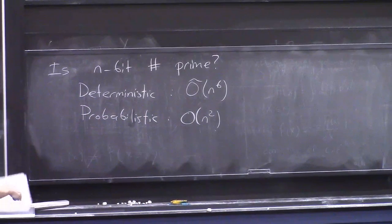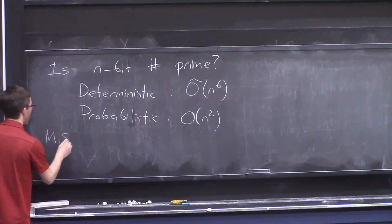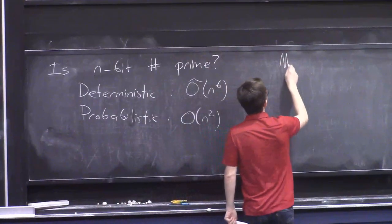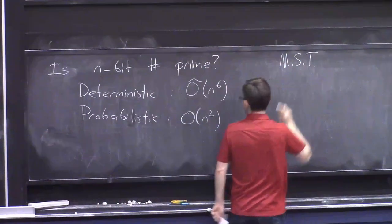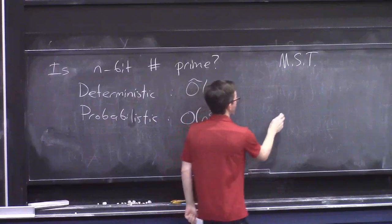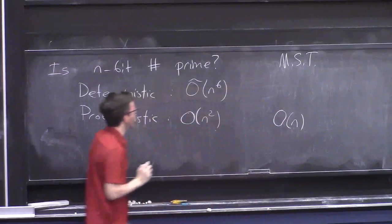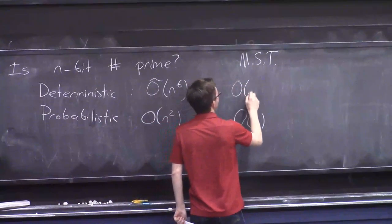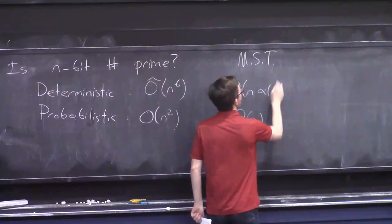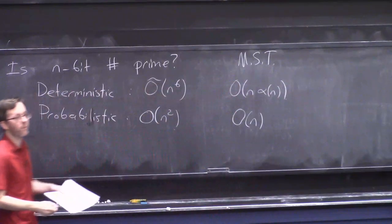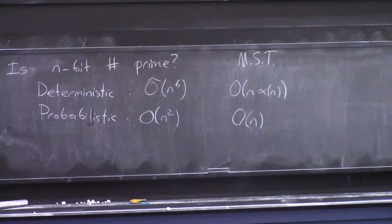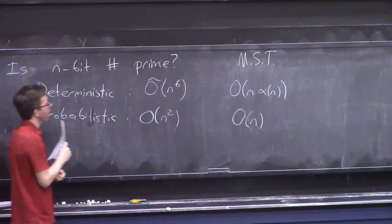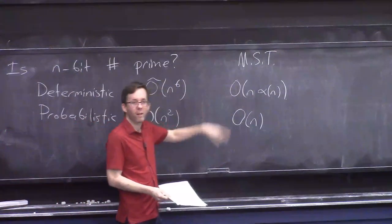So, that's pretty great, and in practice, people only use the probabilistic algorithm. Just one more funny example. If you want to compute the minimum spanning tree in an n-vertex graph, the fastest-known probabilistic algorithm is linear time, and it's not known whether there's a linear time deterministic algorithm. The fastest-known algorithm is order n times alpha n, where alpha is the inverse Ackermann function, some very slow-growing function. So, very exciting. In practice, we can speed up certain computational problems by using randomness.